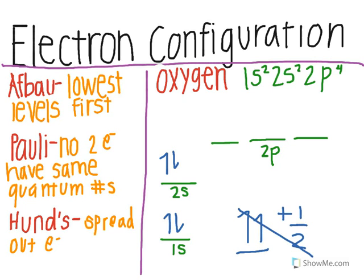When you get to the 2p level, be sure to spread out the electrons as stated in Hund's Law. Draw the up arrows in all sections before doubling up.